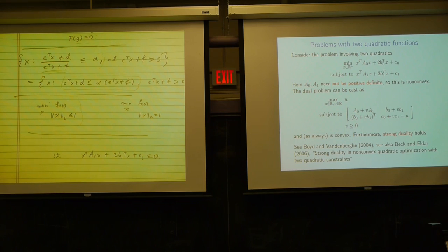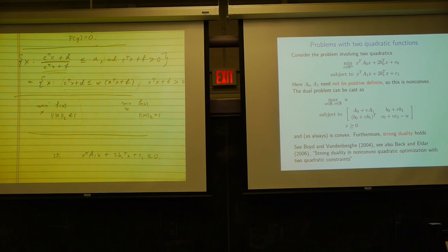This is an active topic of research. There are papers that consider this problem with two non-convex quadratic inequality constraints where strong duality can still be shown to hold, even for complex-valued optimization variables. It's quite a general phenomenon beyond the simple case.